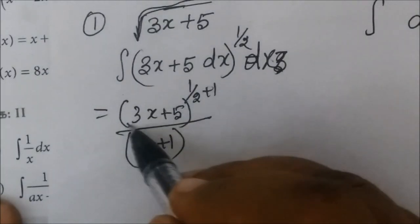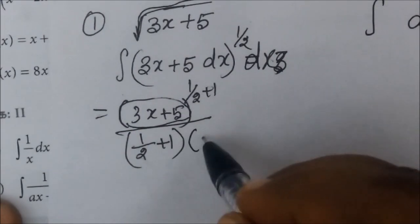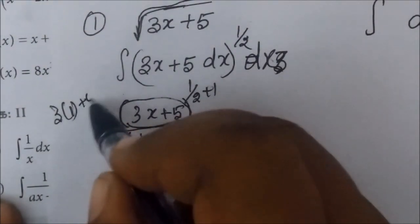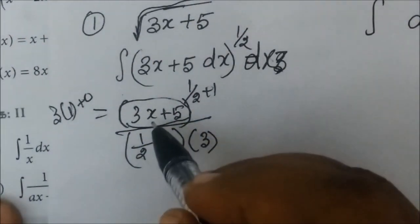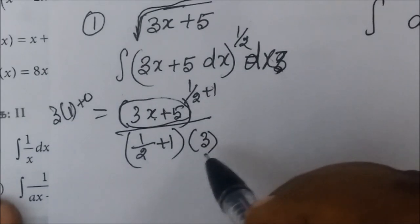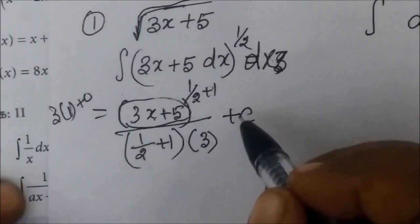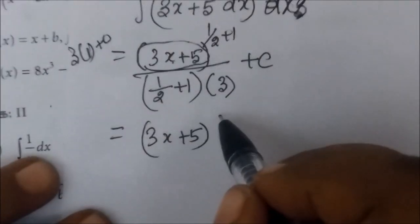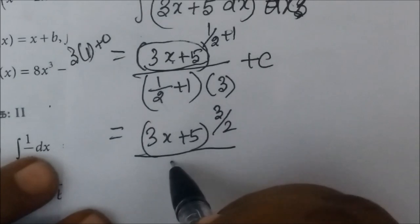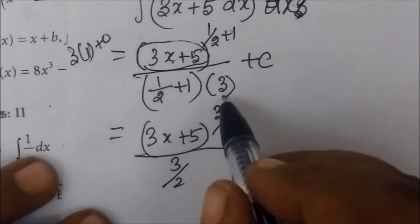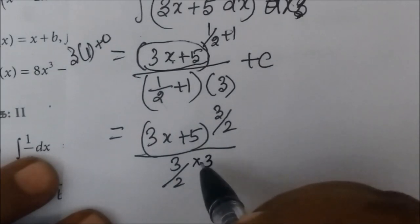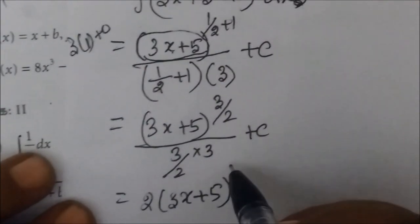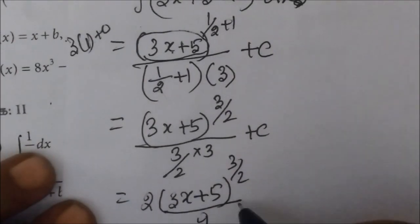So this is equal to (3x + 5) to the power 3/2, divided by 3/2, multiplied by 1/3. This simplifies to 2/9 bracket (3x + 5) to the power 3/2, plus C.